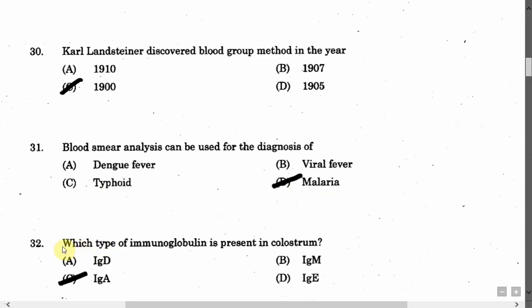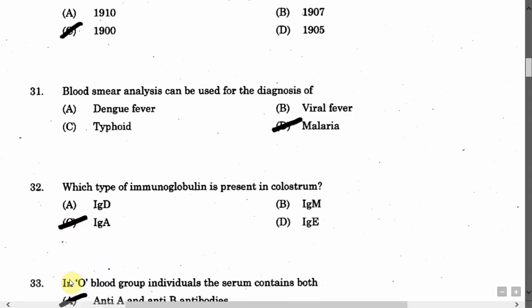The next question is: Which type of immunoglobulin is present in colostrum? Option A: IgD. Option B: IgM. Option C: IgA. Option D: IgA. The correct answer is Option C, that is IgA.